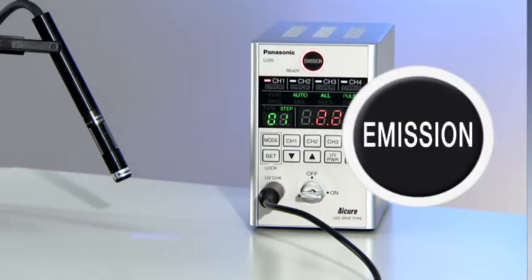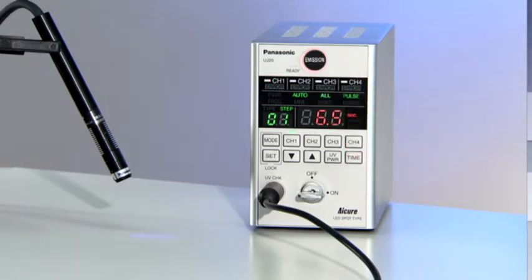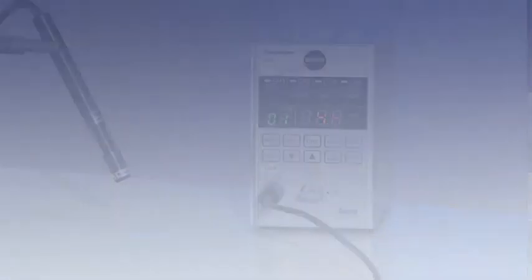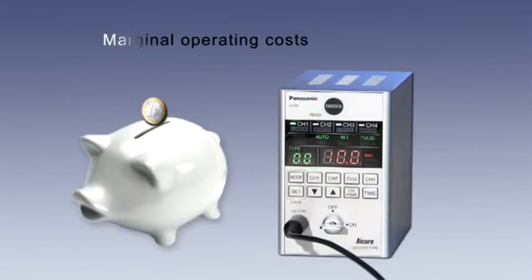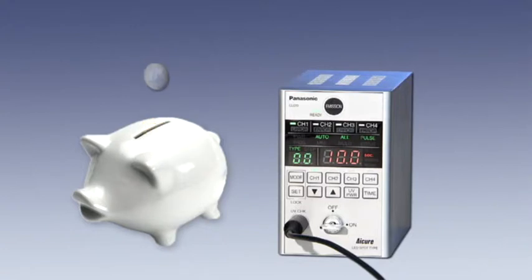iCure UJ20 can be started up and shut down within a few milliseconds, and it uses far less energy than conventional devices, which cuts operating costs considerably compared to standard UV lamps.